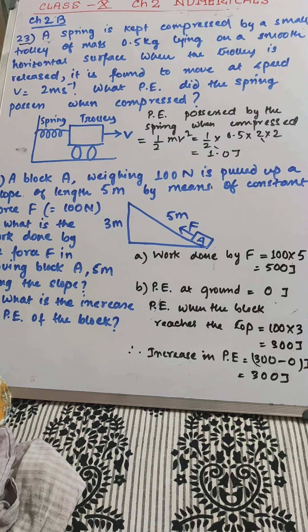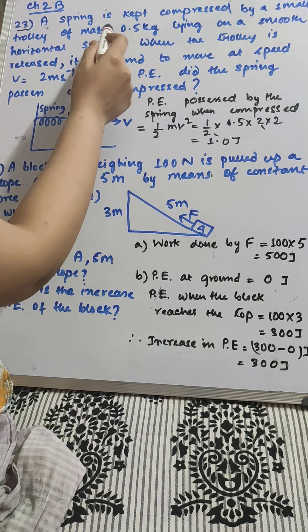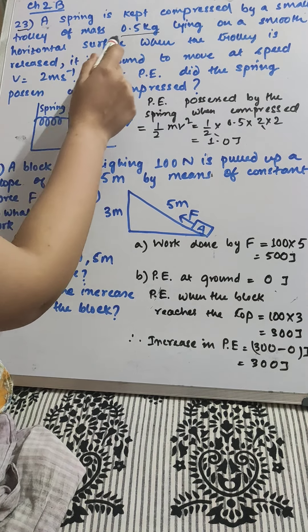Look at sum number 23. A spring is kept compressed by a small trolley of mass 0.5 kg lying on a smooth horizontal surface.